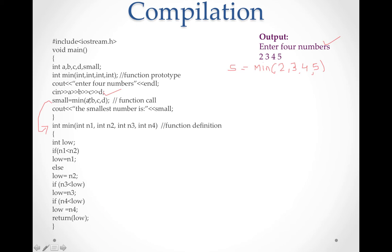For more detail on this topic you can go to lecture numbers 26 and 27 of C++. Now, value A will be copied into N1, B into N2, C into N3, and D into N4. This kind of topic is called call by value — the actual argument is copied to the formal argument. Now int low is declared.